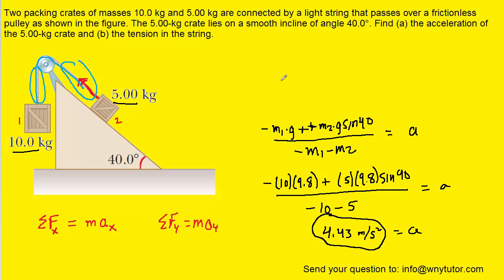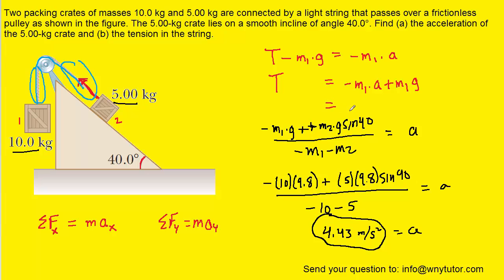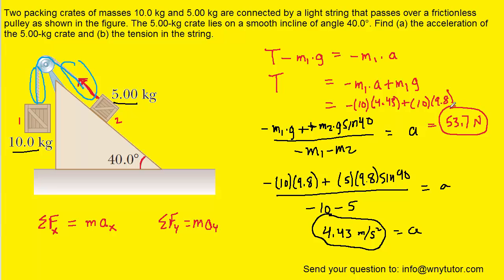For part b, we return to one of our tension equations — specifically the first Newton's second law equation. Rearranging, we add M1g to the right-hand side: T equals negative M1a plus M1g. Plugging in the known values — M1 equals 10 kilograms, a equals 4.43 meters per second squared, and g equals 9.8 — we calculate T and get approximately 53.7 newtons. This is the correct answer for the tension in the string.